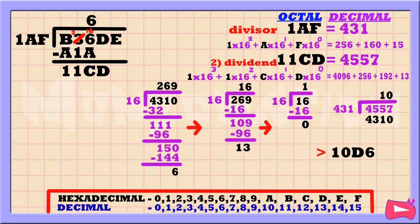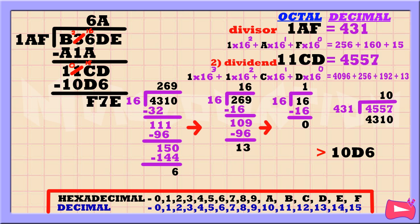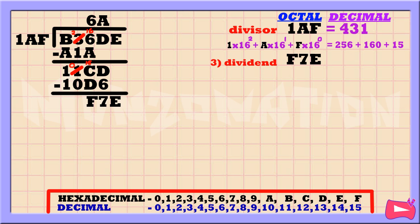So 1AF goes into 11CD 10 times. Then 10 times 1AF is 10D6. Subtract. D minus 6 is 7. Then the next column: C minus D cannot be, so let's borrow from 1 — 1 becomes 0. Borrow 16. 16 plus C is 28, minus D is F. Then 1 minus 1 is 0. Bring down E. F7E is our third dividend.